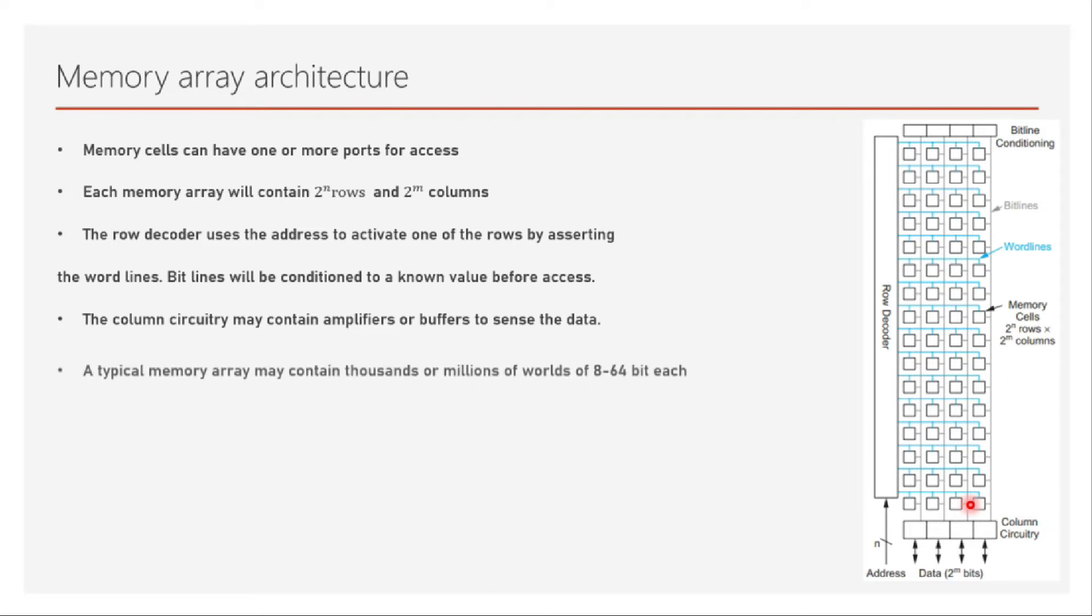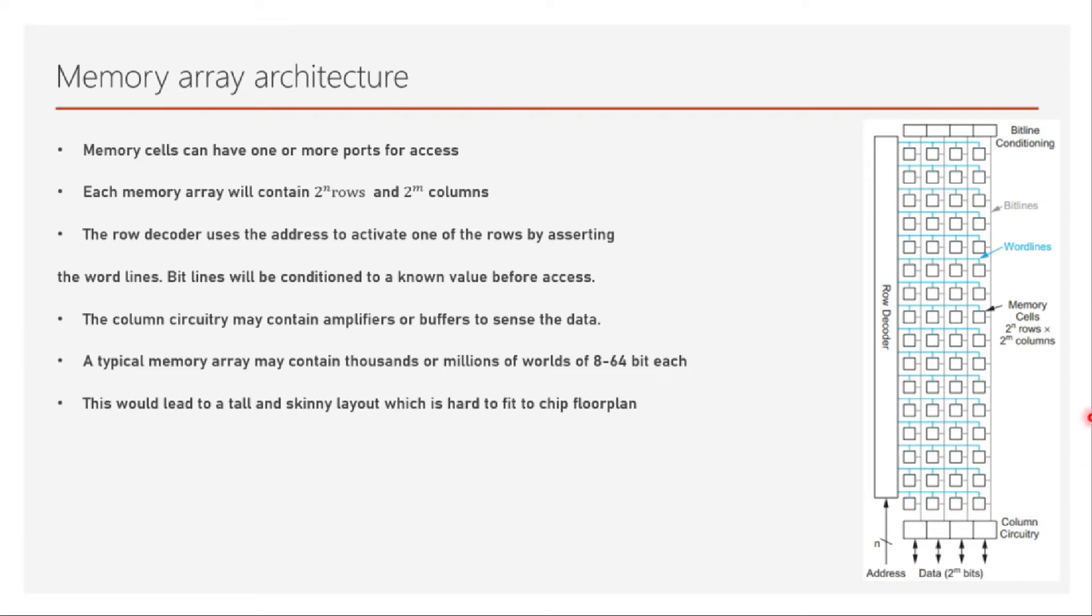A typical memory array may contain thousands or millions of words of 8 to 16 bit each, and each word could be 8 to 16 bit to 64 bit each. If you see this figure it's a memory of 4-bit word and it already looks tall, but if it is millions of words then this will be a very very tall and very thin and skinny layout which is not a good plan for the floor plan and the chip as well.